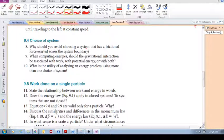Why should you avoid choosing a system that has a frictional force exerted across the system boundary? So if you've got an object that's sliding across the floor, for example, we know that there's friction between the two surfaces. And so what they're saying is, why should you avoid making that your system boundary, the boundary between the two surfaces?